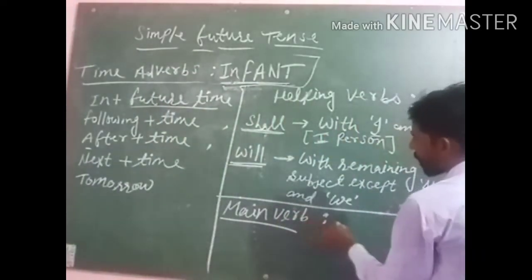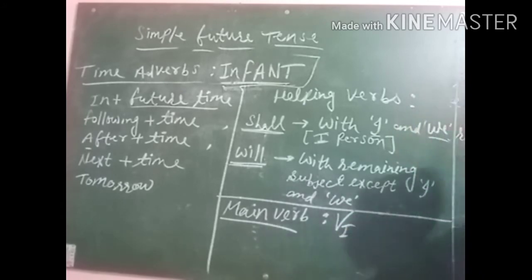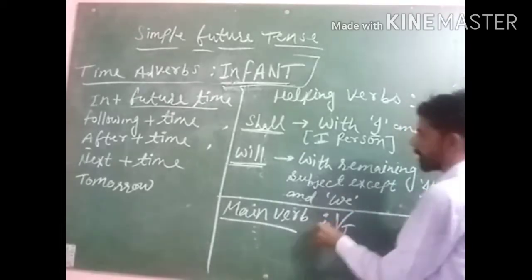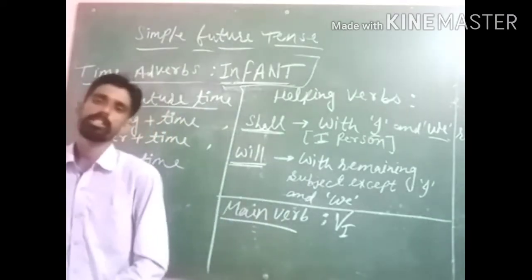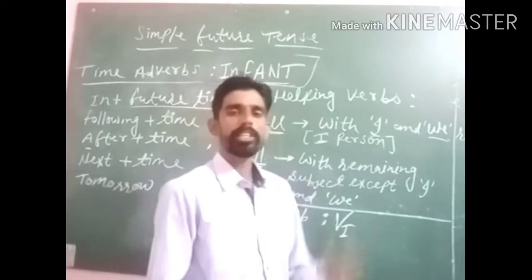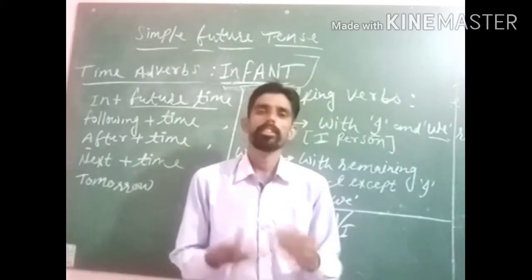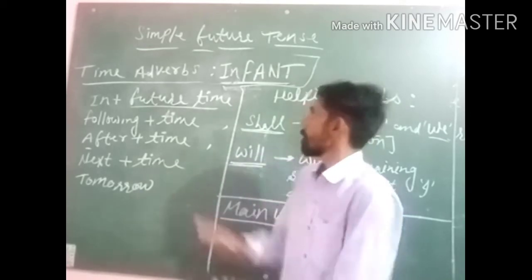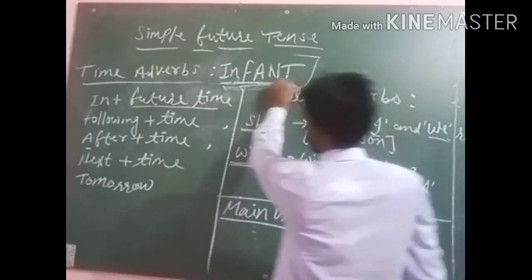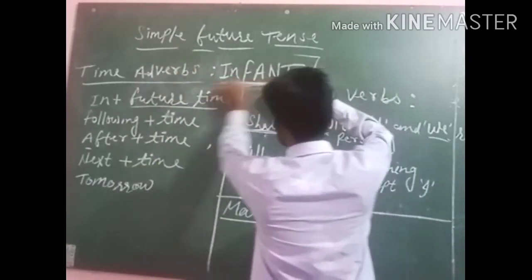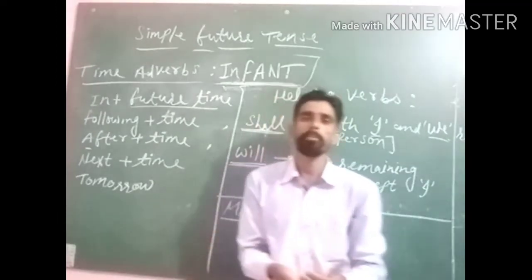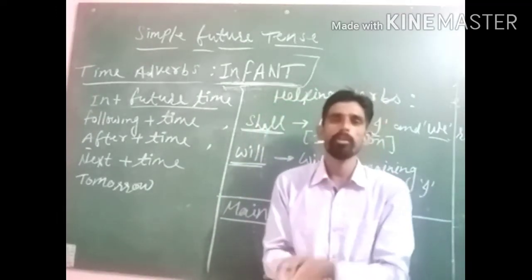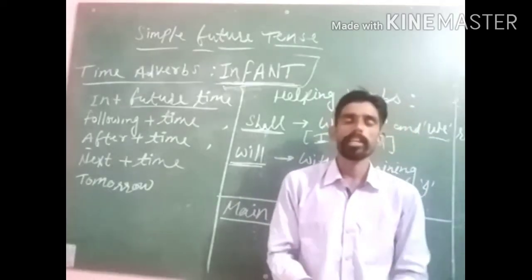The next point is main verb. Main verb is the first form or base form, and first form of main verb is used in simple future tense. So these are the three things required in every tense: time adverbs, helping verb, and main verb. The trick to learn all the time adverbs is INFANT — infant means newborn baby, the baby who has recently been born.